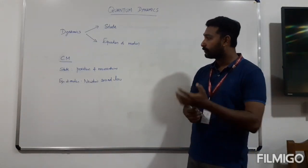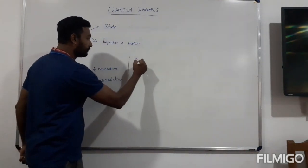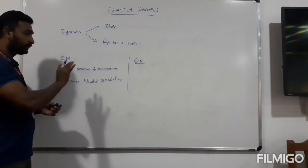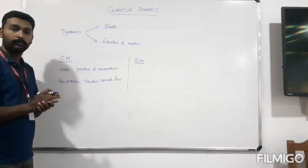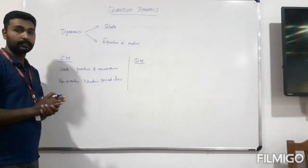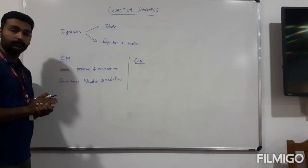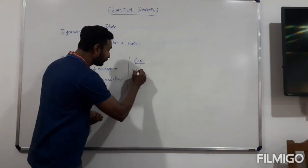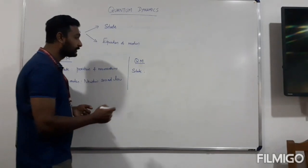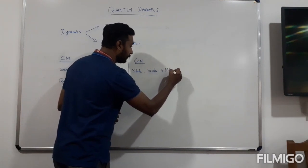Now, in contrast, when you go to quantum mechanics, the state of the system is not position or momentum. You might have noticed the uncertainty principle — we cannot measure position and momentum simultaneously with complete accuracy. So position and momentum cannot be taken as the state of the system in quantum mechanics. As we discussed when covering the postulates of quantum mechanics, the state of the system is represented by a vector in Hilbert space.